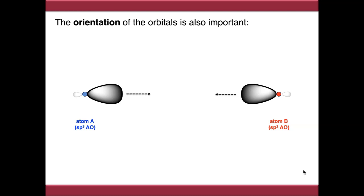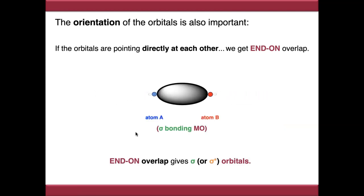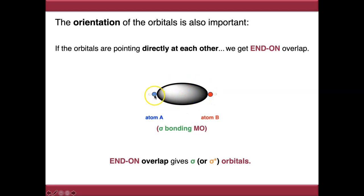The orientation of the orbitals is also important. Using sp3 and sp2 atomic orbitals now, the directionality of these orbitals matters. If the orbitals are pointing directly at each other, we get what I've called end-on overlap. Bringing these orbitals together forms a new orbital in the middle of the two atoms. End-on overlap gives us what we call a sigma orbital, or sigma star if it's anti-bonding. All of the orbital density is in the internuclear distance, directly between the two atoms.